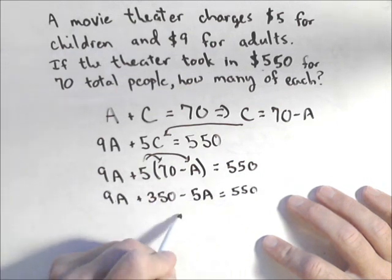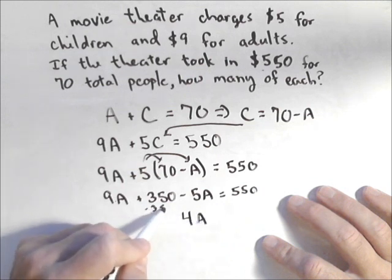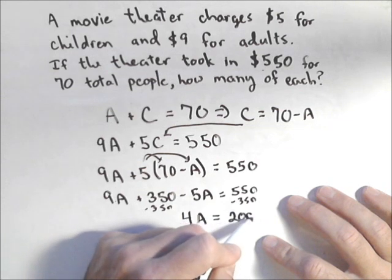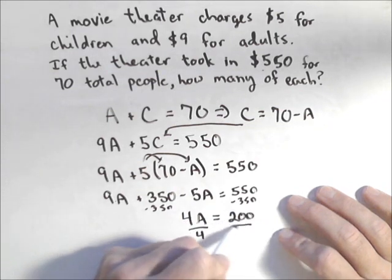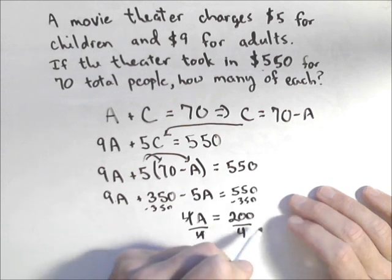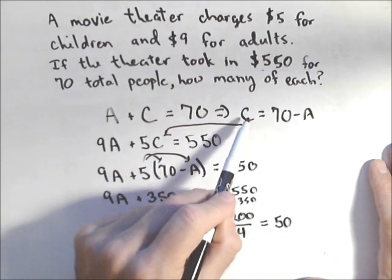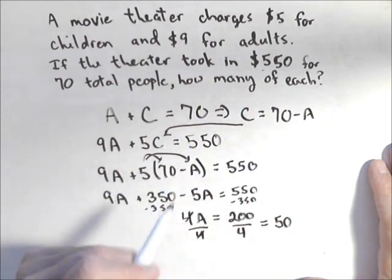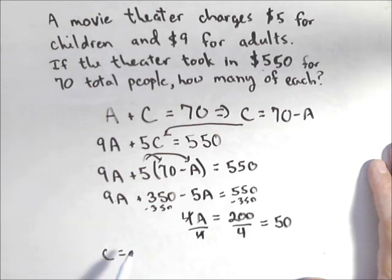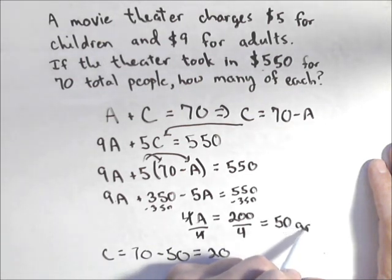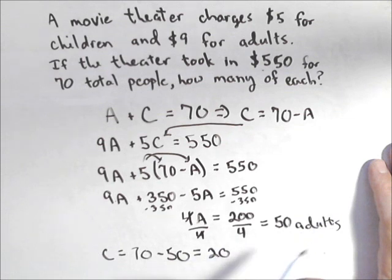So 9A minus 5A gives me 4A, and subtracting 350 from each side gives me 200. Dividing by 4 will give me the number of adults — so there were 50 adults. To get the number of children, one of the nice things about substitution is our other variable is already solved for: the number of children equals 70 minus 50, or 20.